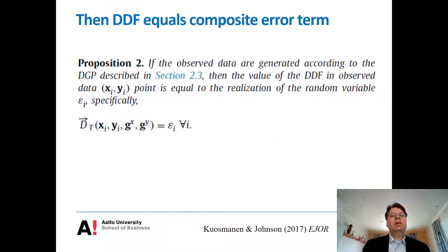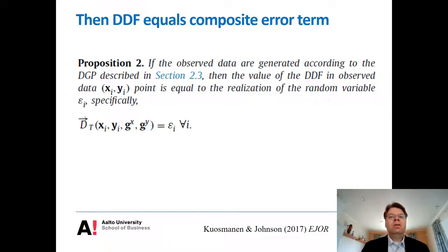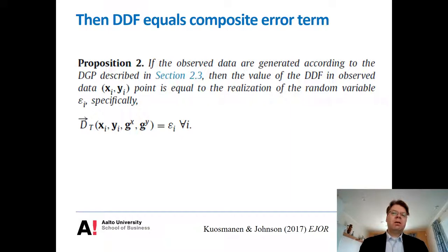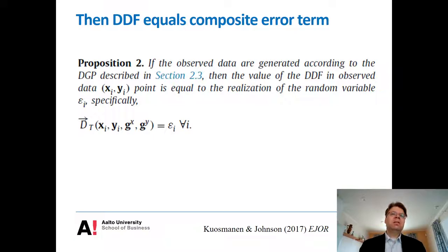We can show theoretically that if data are generated according to this directional data generating process, then the value of the directional distance function at a given point X_i, Y_i is equal to the composite error term epsilon_i. This is analogous to the parametric approach — in the Perelman and Santini formulation of the output distance function, the logarithm of the distance function is treated as the composite error term, and our result is completely analogous.